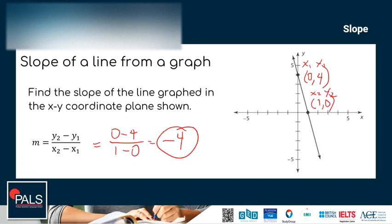If you remember from the previous slide, when the graph is downhill, the slope is negative. So our answer — the slope that we got, negative 4 — makes sense because the graph is downhill.